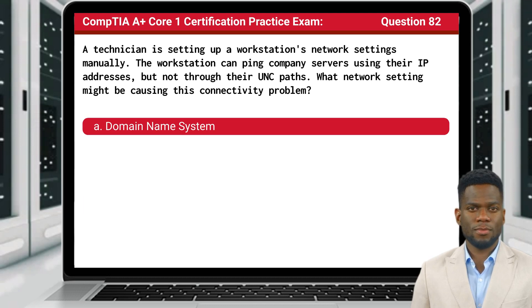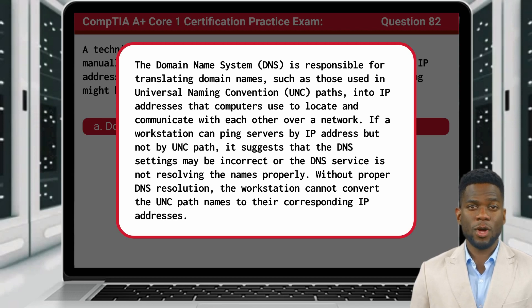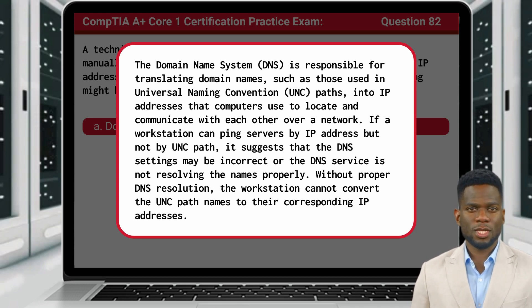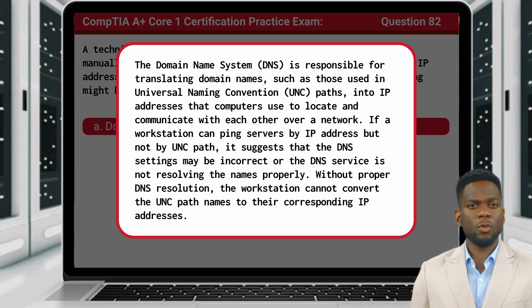The answer is A, Domain Name System. The Domain Name System is responsible for translating domain names, such as those used in UNC paths, into IP addresses that computers use to locate and communicate with each other over a network. If a workstation can ping servers by IP address but not by UNC path, it suggests that the DNS settings may be incorrect or the DNS service is not resolving the names properly. Without proper DNS resolution, the workstation cannot convert the UNC path names to their corresponding IP addresses.